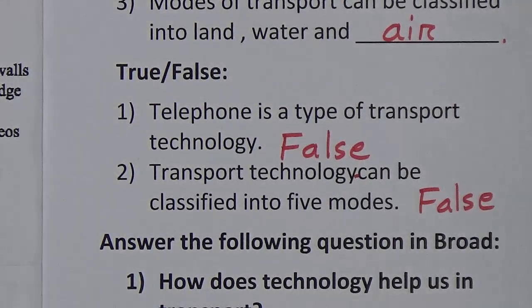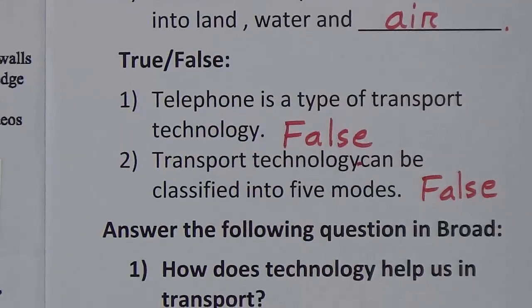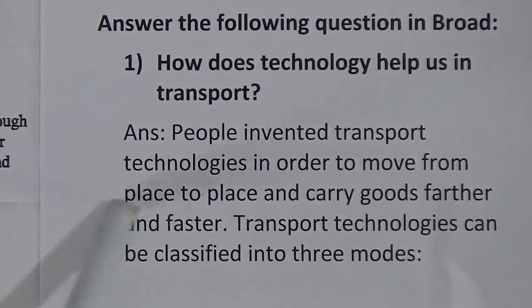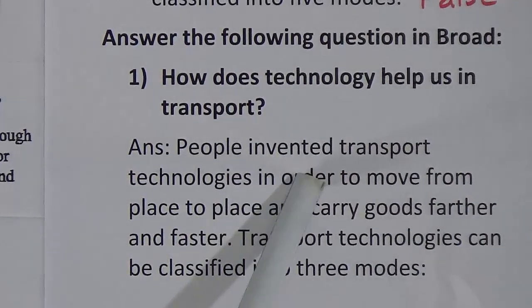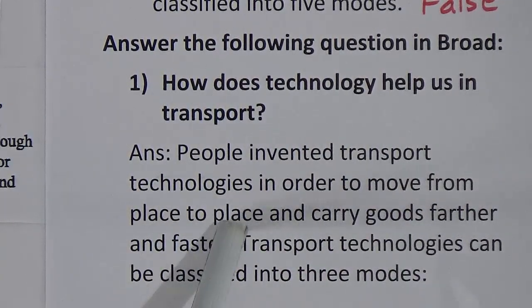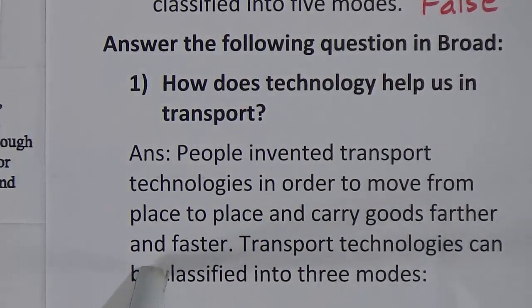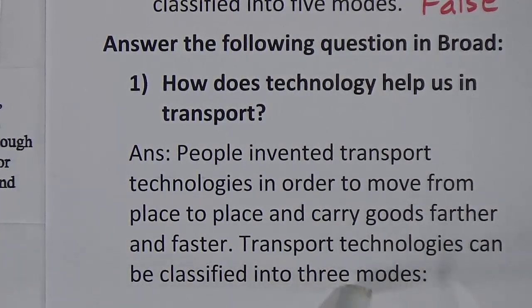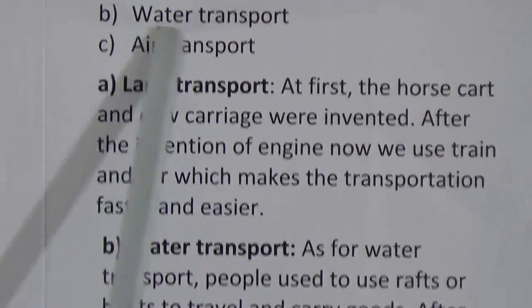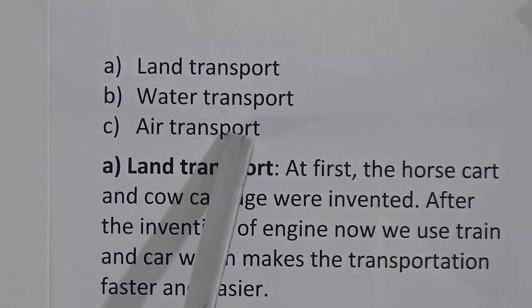Now we will discuss the broad question. The question is: how does technology help us in transport? The answer: people invented transport technologies in order to move from place to place and carry goods further and faster. Transport technologies can be classified into three modes: one — land transport, two — water transport, and three — air transport.